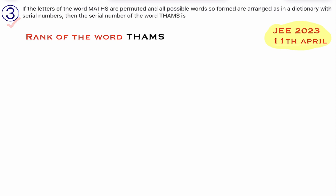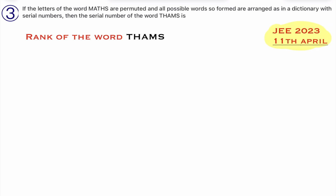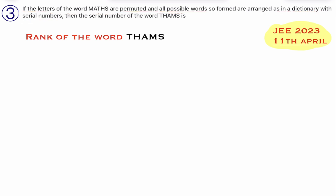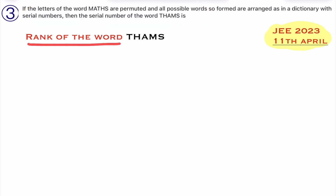This is the third question we are doing from the permutations and combinations chapter. This question is given in JEE 2023. The actual question is: if all the letters of the word THUMBS are arranged in all possible ways and listed as in a dictionary with serial numbers, then find the serial number — that is, the rank — of the word THUMBS.